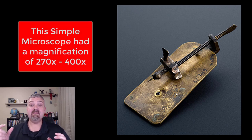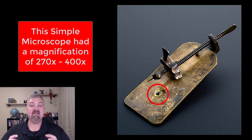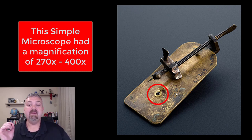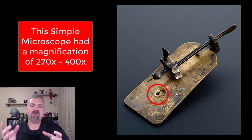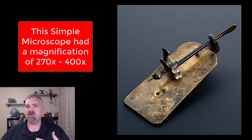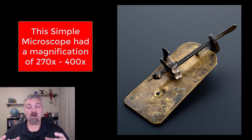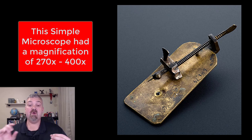This is an example of a simple microscope, just a single ball-like lens in the center. We don't know exactly for sure, but the magnification on his microscopes was probably somewhere in the neighborhood of 270 to 400x, which is as far as we can get on our compound microscopes today without using immersion oil. Pretty amazing.